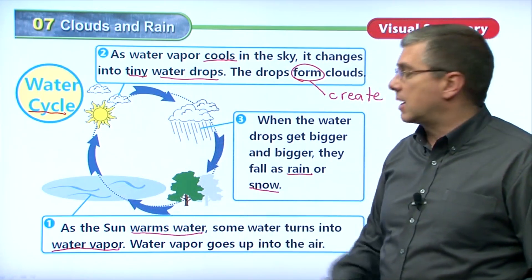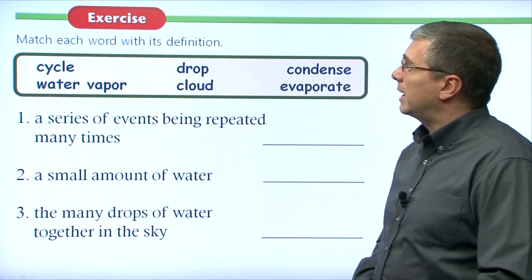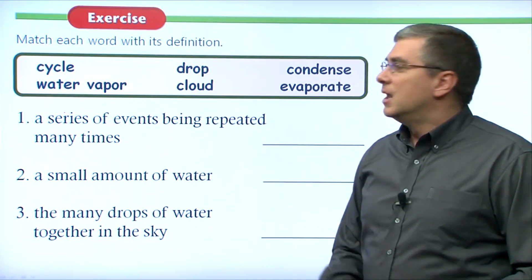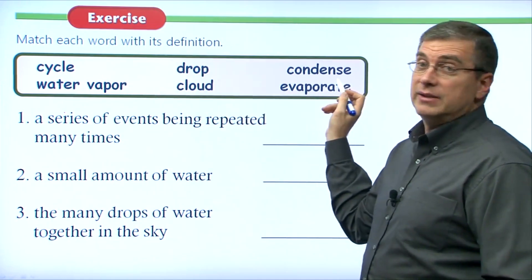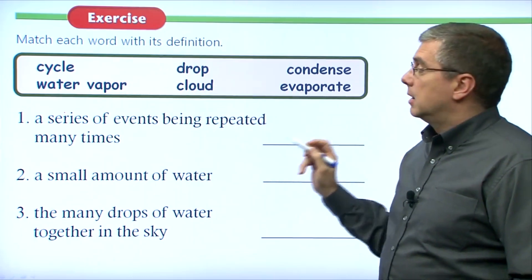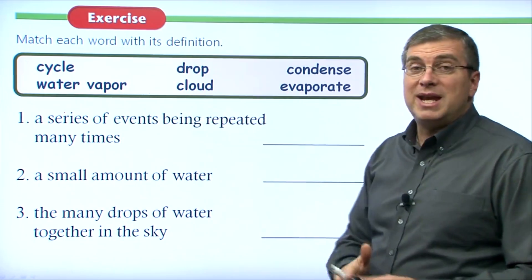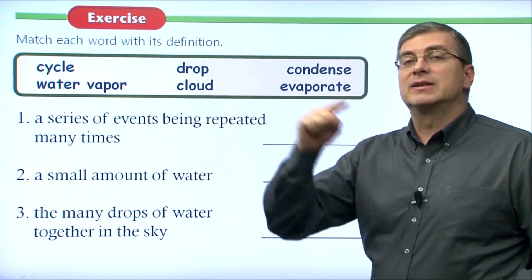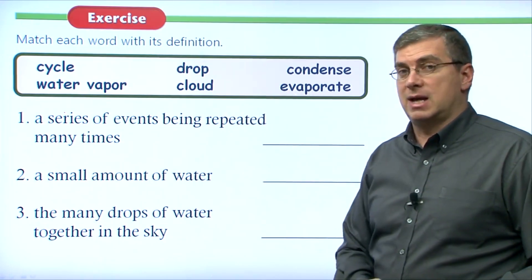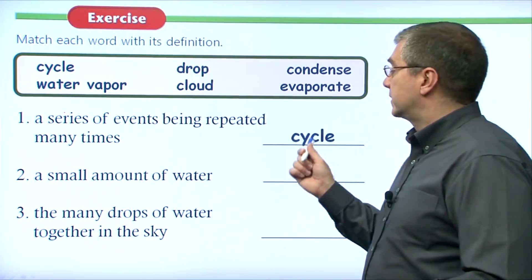That's a very good diagram of our water cycle — we have three steps. Now let's do the exercise: match the words with their definitions. The words are cycle, drop, condense, water vapor, cloud, and evaporate. The first definition — a series of events being repeated many times, again and again — that is a cycle.